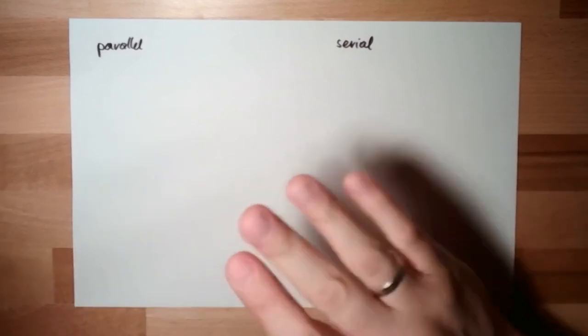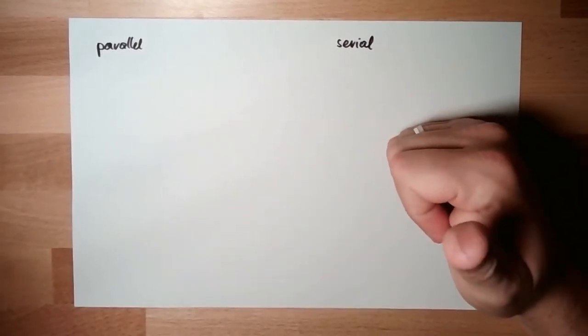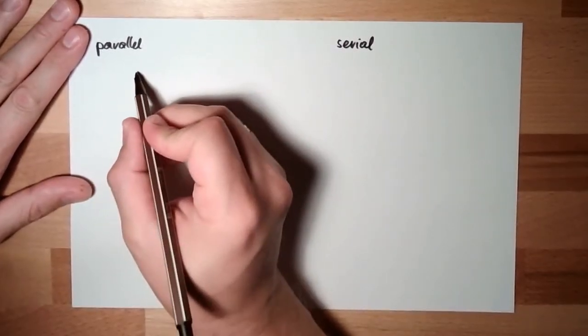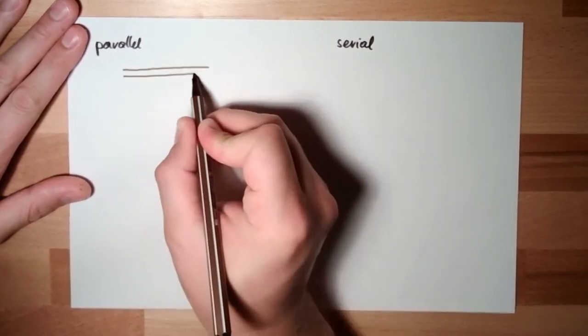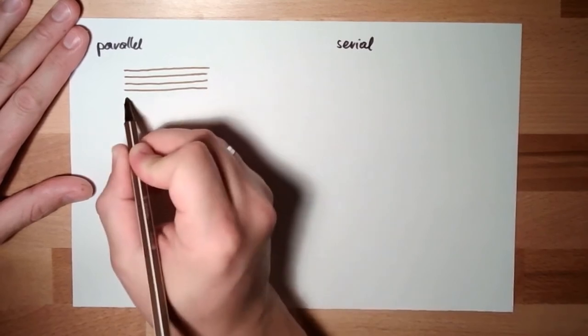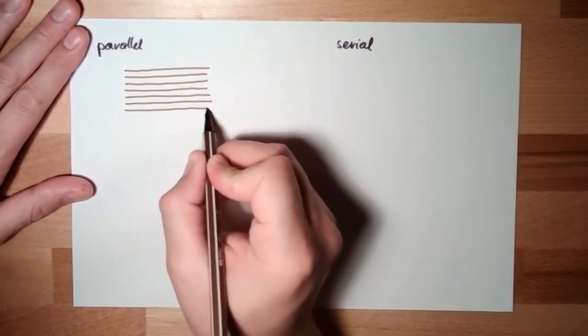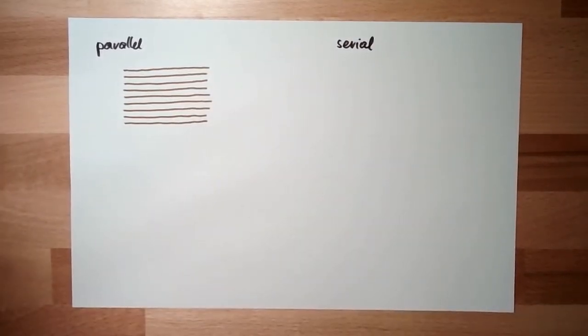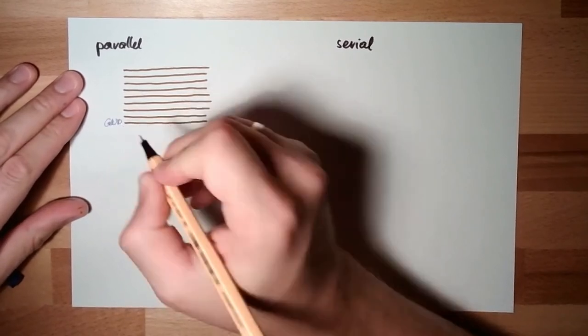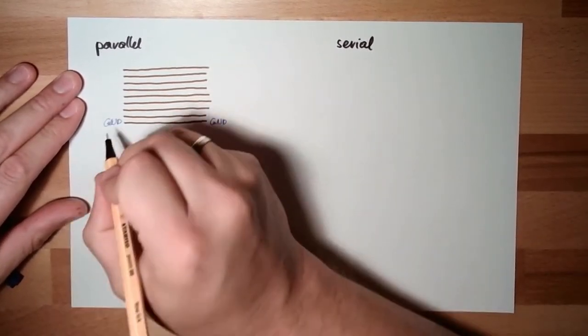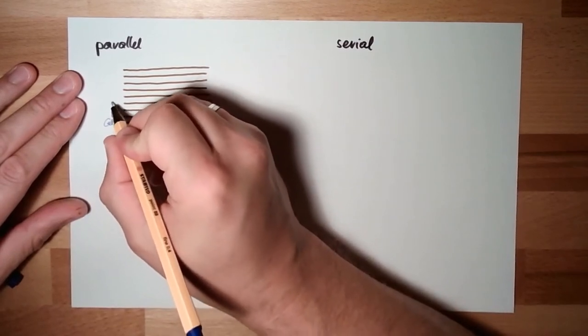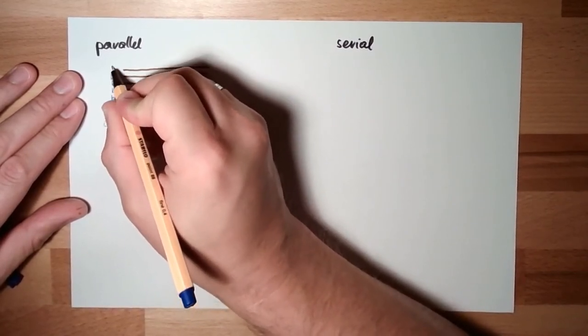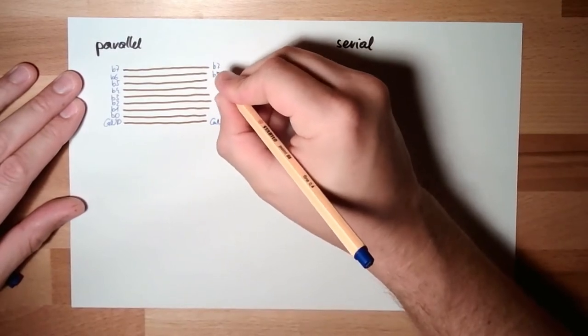Parallel transfer means if we want to transfer one byte, I'm using nine lines: one, two, three, four, five, six, seven, eight, nine lines. Why nine? One is ground, and the others are bit number zero, bit one, bit two, bit three, bit four, bit five, bit six, bit seven, and so on. On the other side I have the same.